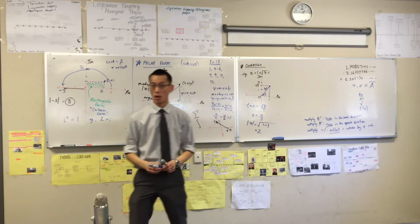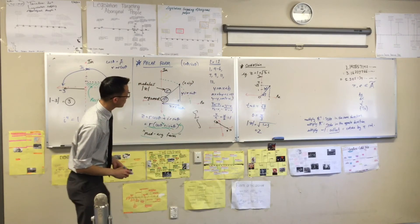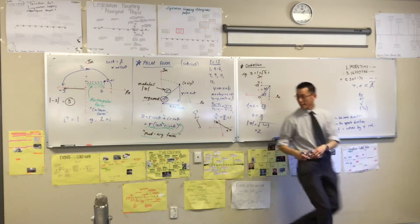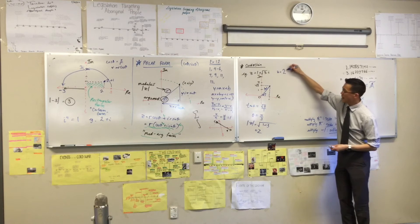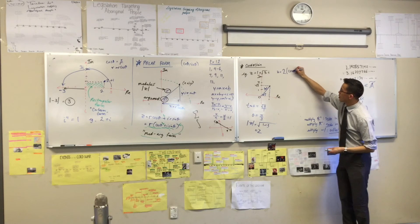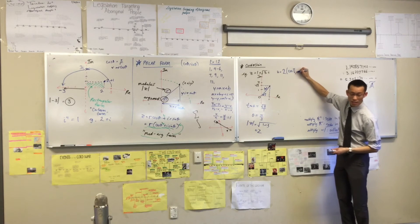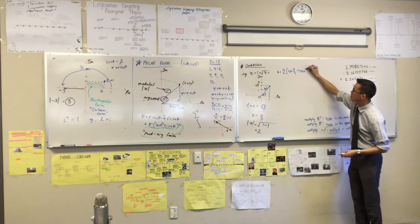So how am I going to write this in mod arg form, in polar form? I'm going to say, instead of this, I'm going to say z is equal to r outside of cos theta plus i sine theta.